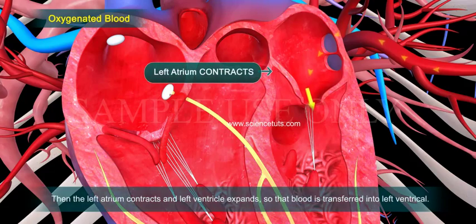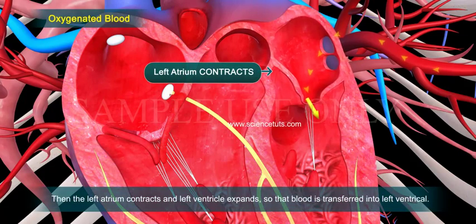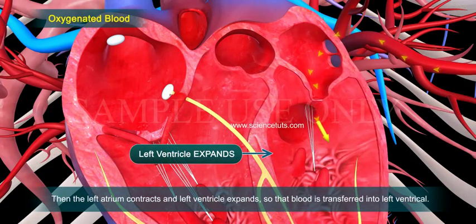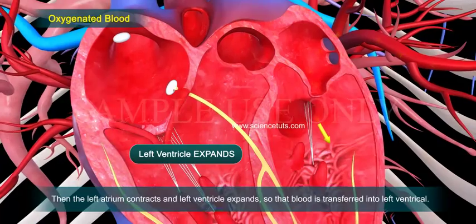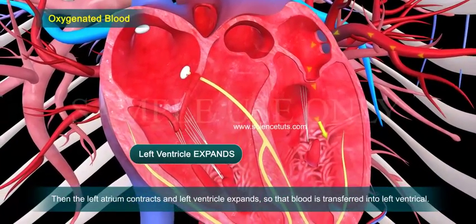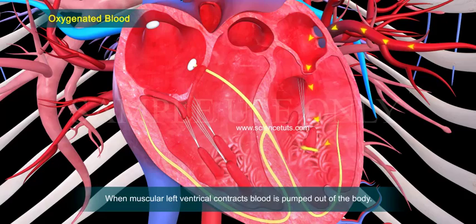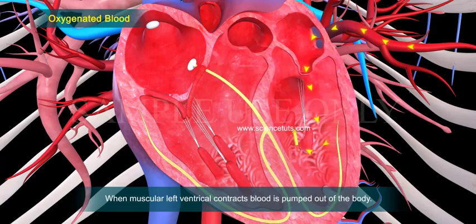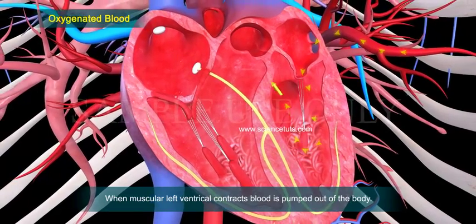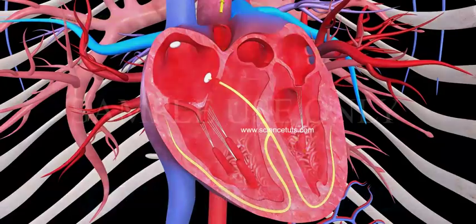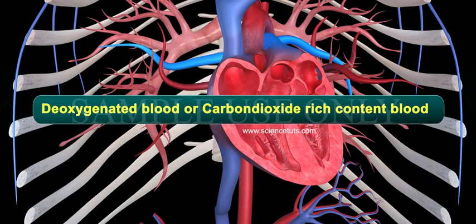Then the left atrium contracts and the left ventricle expands, so that blood is transferred into the left ventricle. When the muscular left ventricle contracts, blood is pumped out to the body.